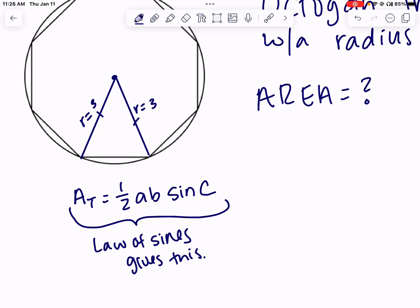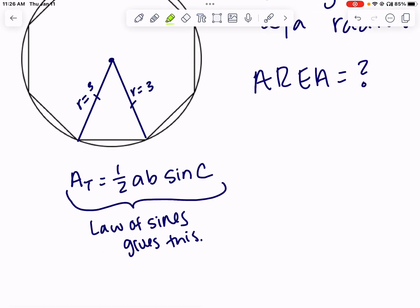There are other ways to do it. It's just a take on the fact that a represents the base of your triangle, and b sine of c represents the height. It saves us a lot of work.